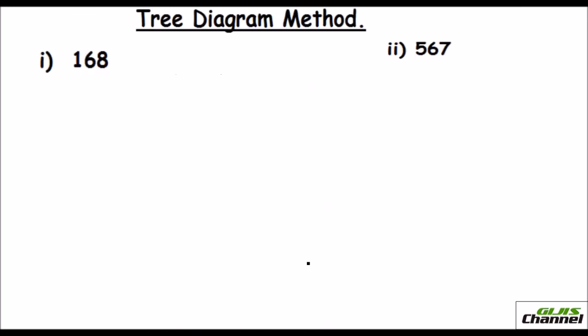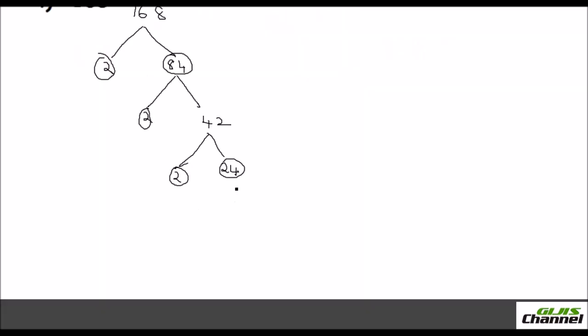Now the same factorization I am doing using the tree diagram method. I just take 168 and I split it into 2. This is 2 times 84. Now 84 I can still split. Since it's an even number, I'm going to do it by 2 only. So that is 2 and here it would be 42. Now again this 42 I can split. It is 2 times 24.